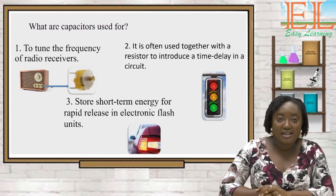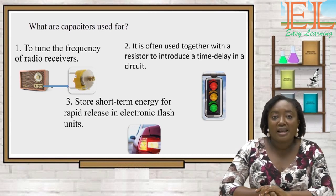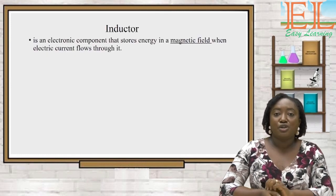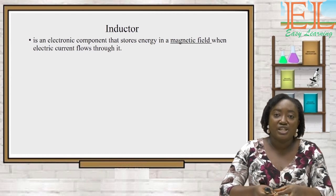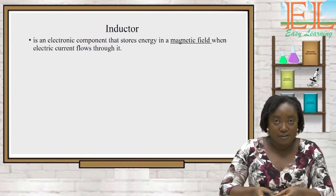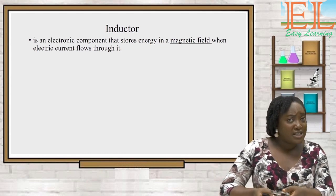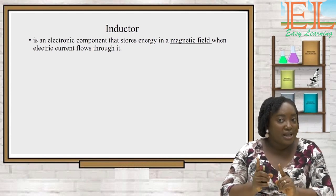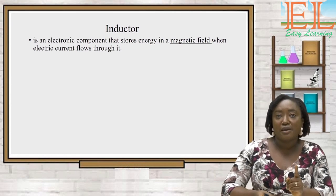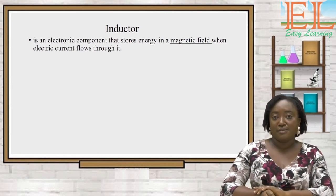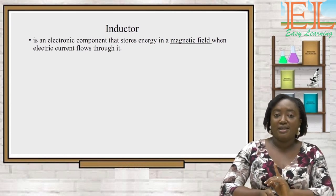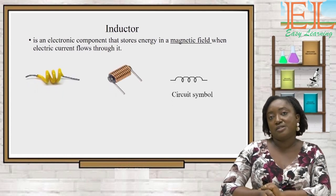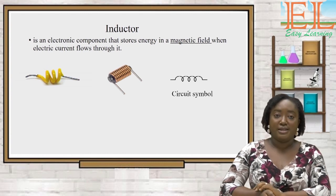Now to our third component: the inductor. The inductor is an electronic component that stores energy in a magnetic field. Like the capacitor, the inductor stores energy, but this time in the magnetic field, when electric current flows through it. An inductor looks like this or like that, and that is the circuit symbol of an inductor.